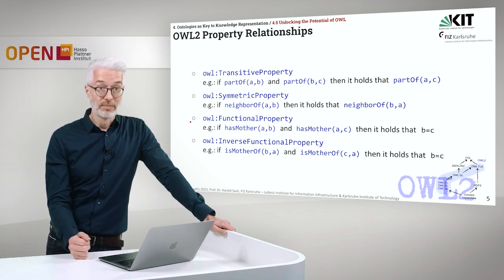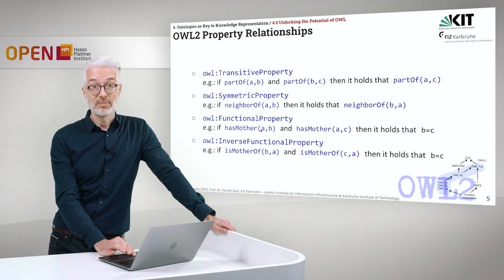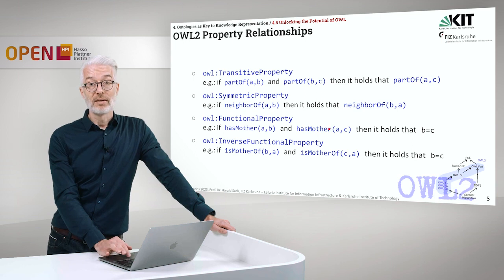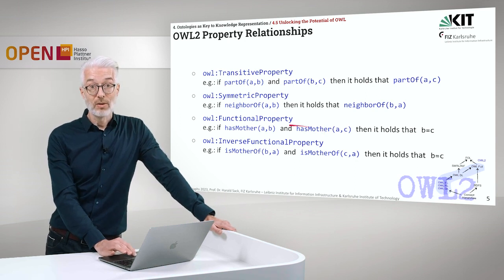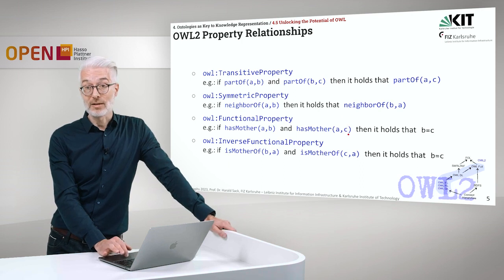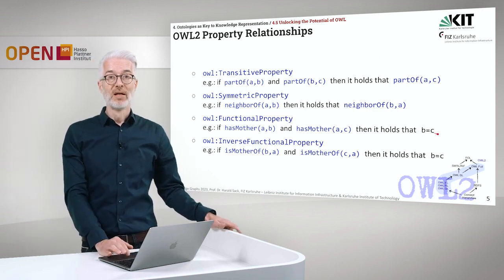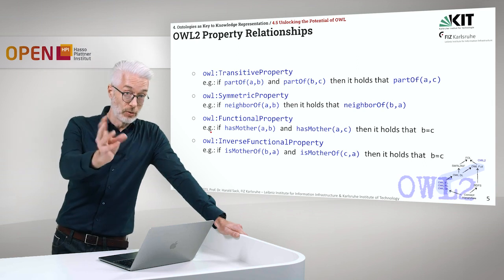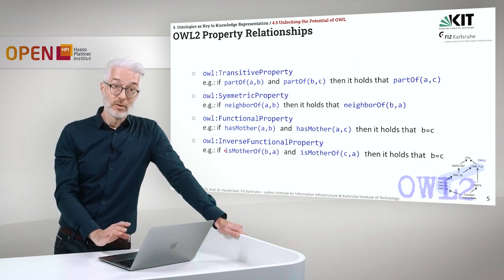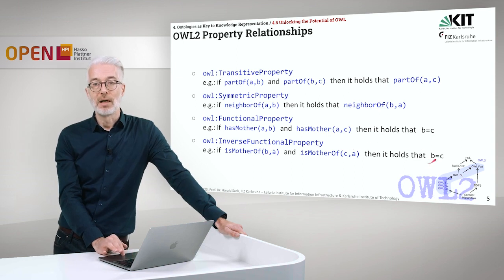Next thing would be functionality. I can declare a functional property. For example, if I say A has mother B, and then C is the mother of A — simply because 'has mother' is a functional property, it must be that B and C are identical. A cannot be mapped to two different values because it's functional like a mathematical function. So it holds that B equals C, and this is done via OWL FunctionalProperty. Of course I can also turn it around with inverse functional property — so if B is mother of A and C is mother of A, inverse functionality means B and C must be the same.